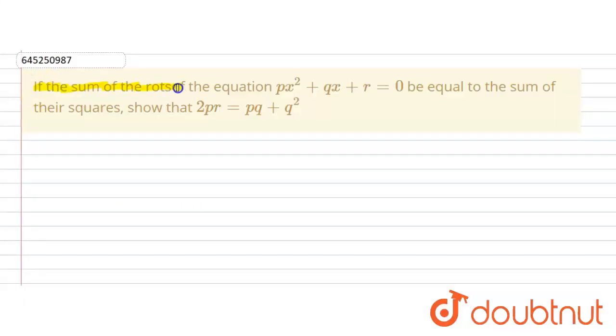Hello students. Here the question is given: if the sum of the roots of the equation px² + qx + r = 0 is equal to the sum of their squares, then show that 2pr = pq + q². So let's solve this question.